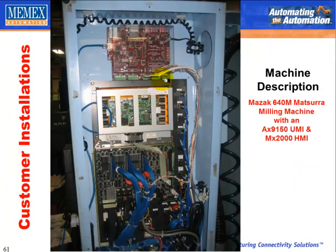In this case, a Mazak 640M Matsura milling machine with the AX9150 universal machine interface is connected and wired directly in through the cables, making sure it picks up the right signals and is operating correctly. As we can see across all these examples, the Memix solution is easy to install, compact, unobtrusive, away from the operator and regular manufacturing, and fully controlled inside the cabinet with the rest of the electronics and equipment.